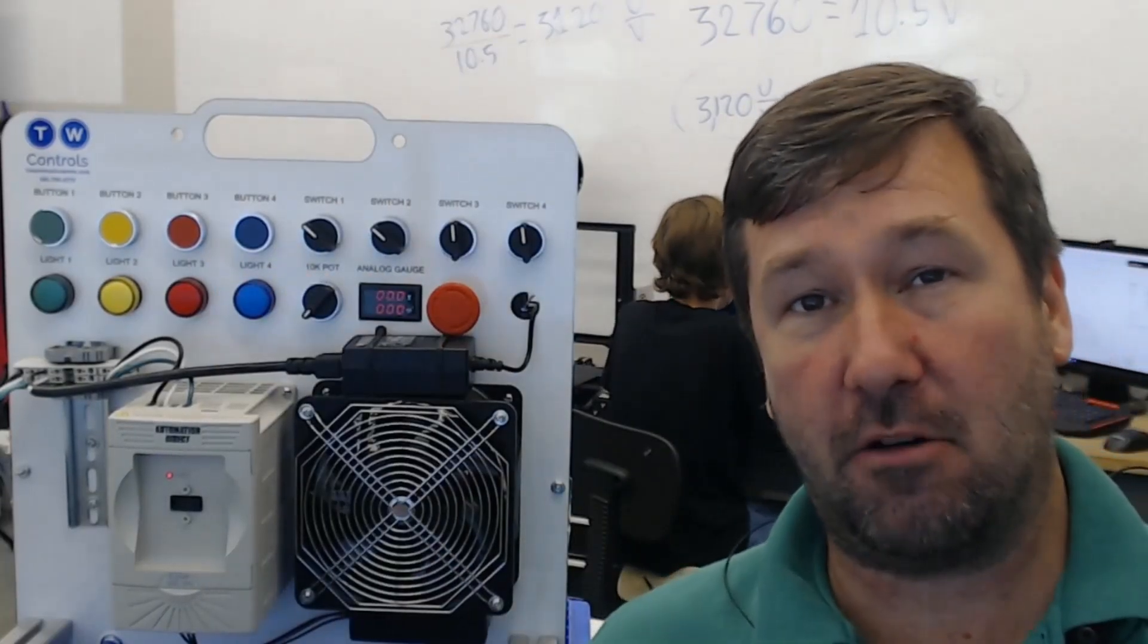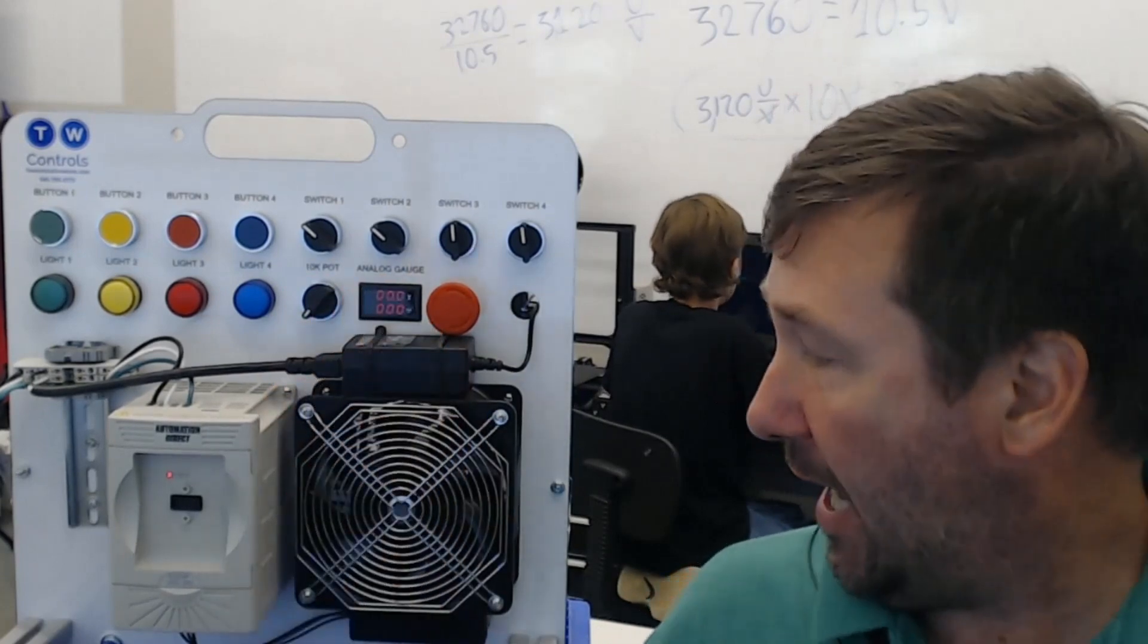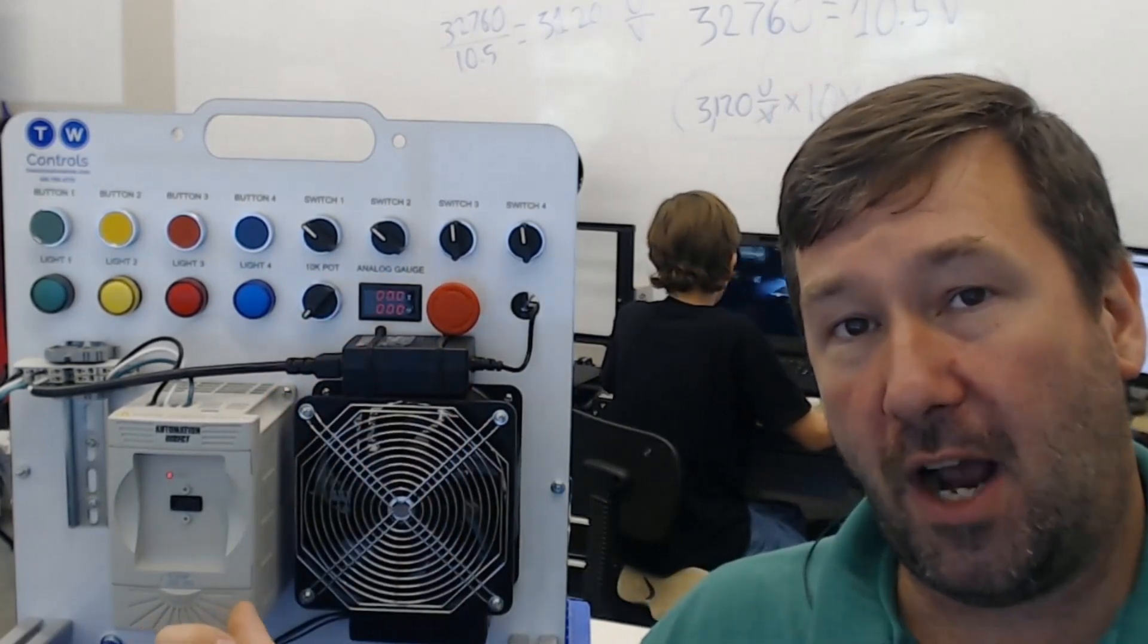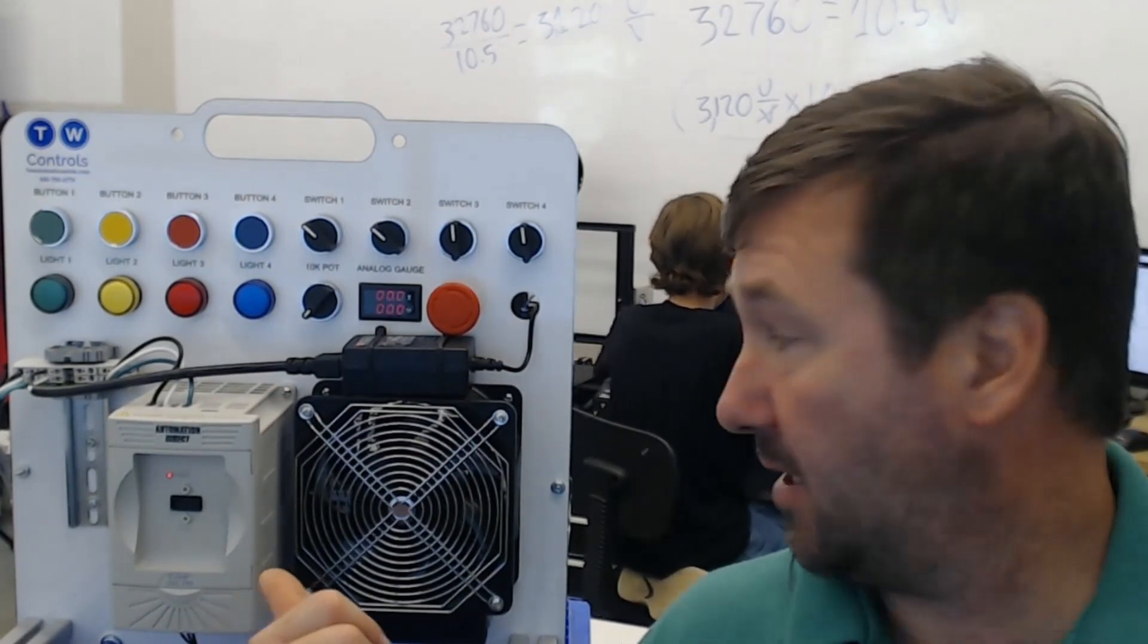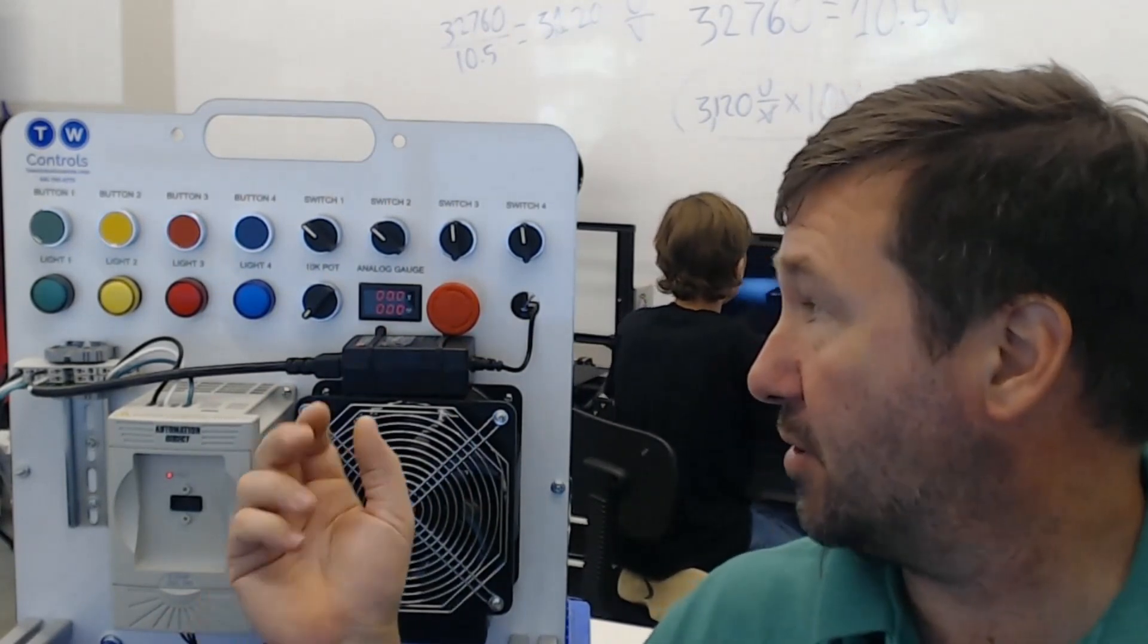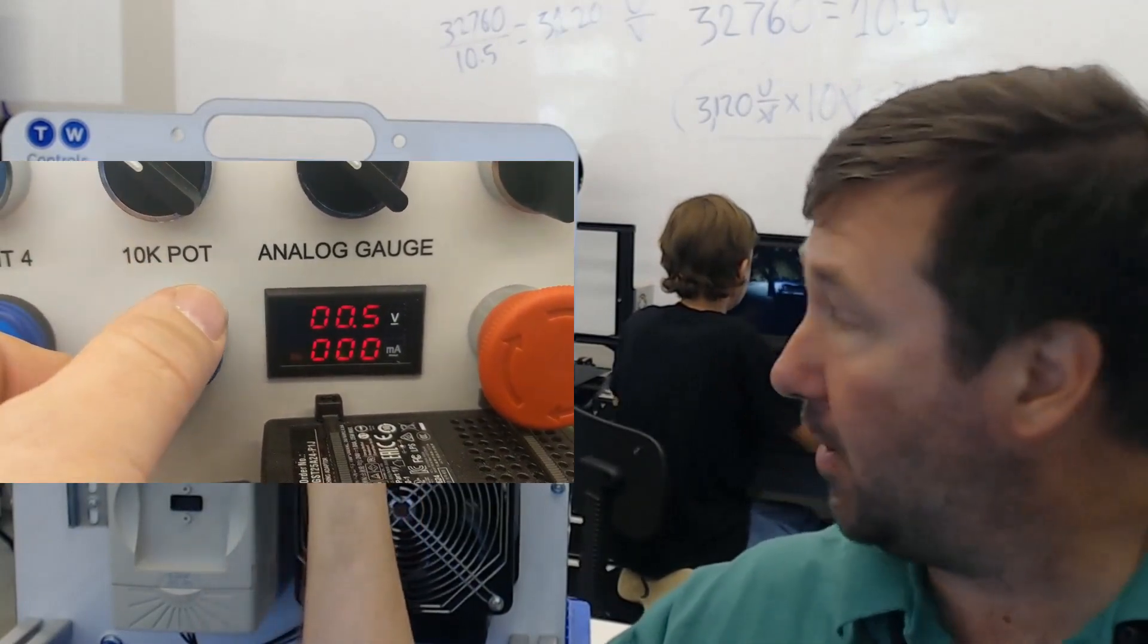So in our last video we wired in our potentiometer to our meter and we used 10 volt off of our drive. So our automation question of the week was, well how do you make 10 volt if you don't have a drive? Because if you just wire it to your 24 volt, you're going to get 24 volt at the max of your potentiometer.